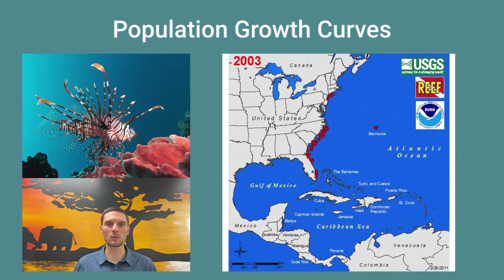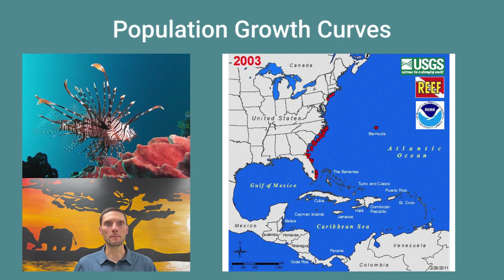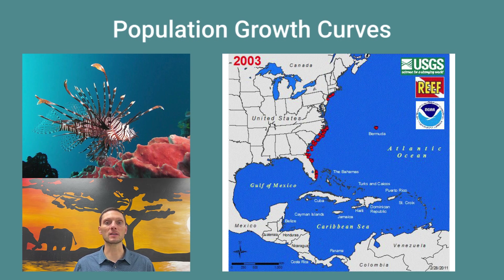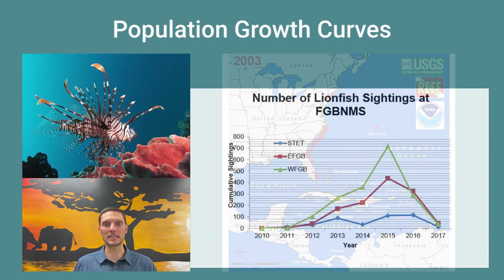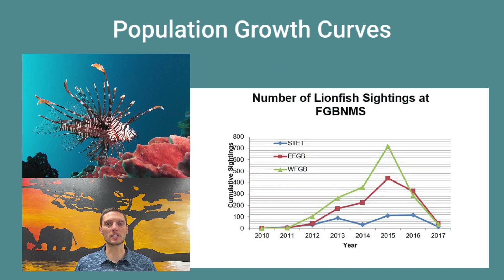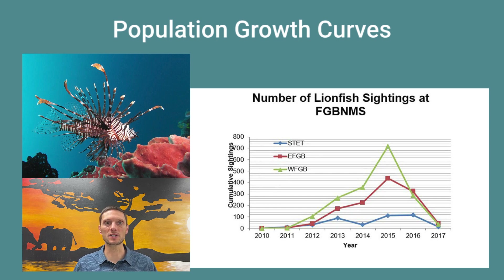A good example of exponential growth is invasive lionfish in the Atlantic and Caribbean. Lionfish are naturally from the Red Sea but were first discovered in this area in the early 2000s, likely released from fish tanks. They have no natural predators in this environment and consumed fish eggs and small fish. Their population showed exponential growth, and by 2009 they were well established along the Atlantic coast and throughout the Caribbean.